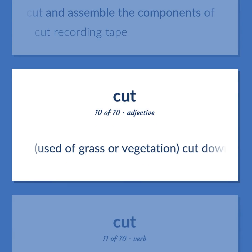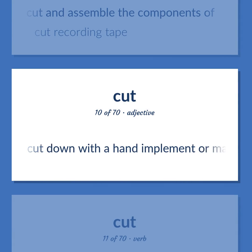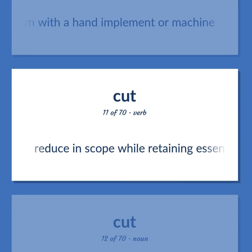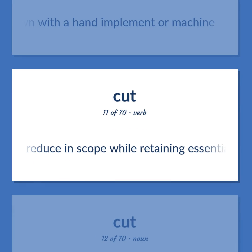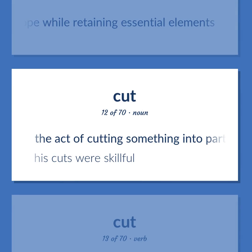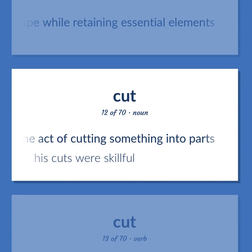Cut (verb): Used of grass or vegetation, cut down with a hand implement or machine. Reduce in scope while retaining essential elements. The act of cutting something into parts — his cuts were skillful.